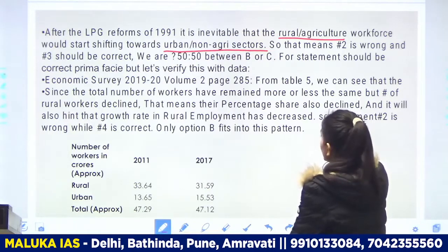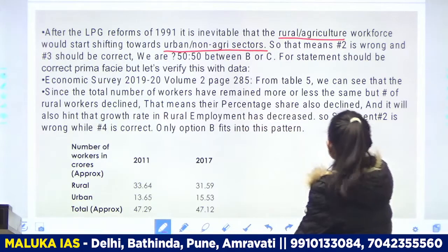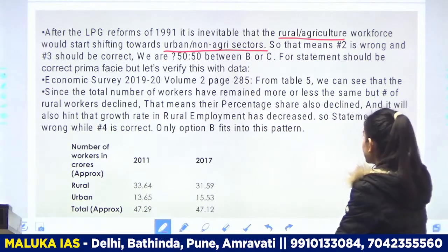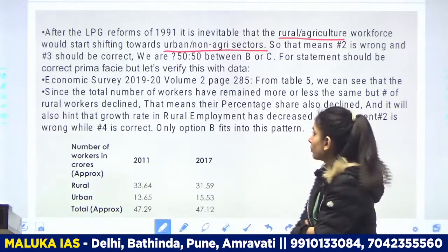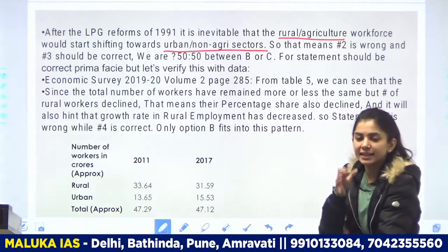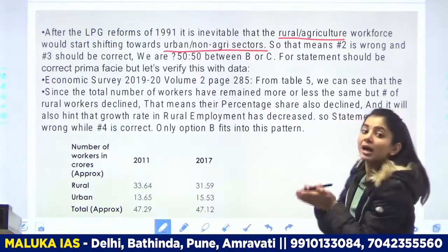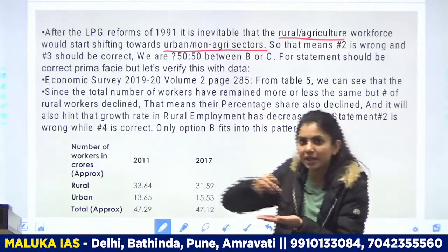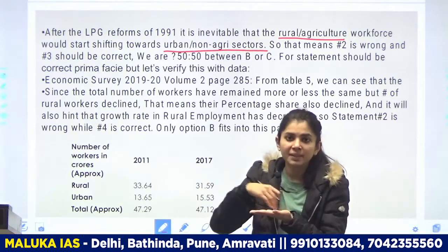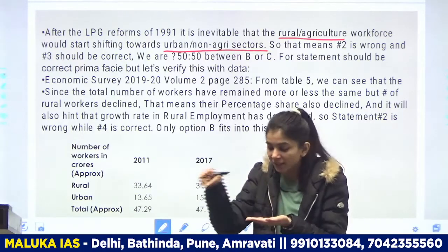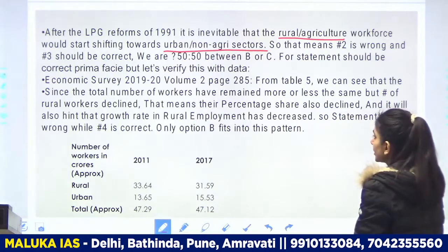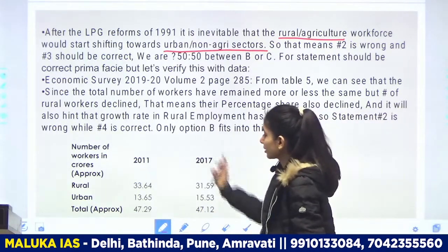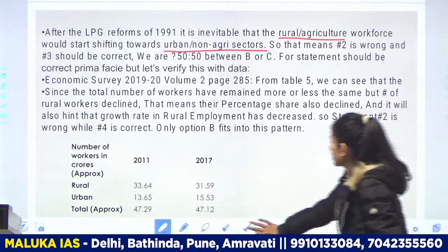Next statement: jo total number of workers the, woh equal hi rahe. Lekin jo rural workers the, woh kam ho gaye. Isliye jo percentage share hai rural workers ka, woh kam ho gaya tha. Rural area mein mostly agriculture related kaam hota hai. Rural area se workers shift ho gaye urban area mein — toh total rural workers ka percentage share kya hoga — woh kam ho jaayega, kyunki now they are counted in urban working population. Isliye unka percentage share kam ho gaya tha. Aur isi ke saath jo growth rate thi rural employment mein, woh bhi kam ho jaayegi. Isliye second statement wrong hai aur fourth correct hai.